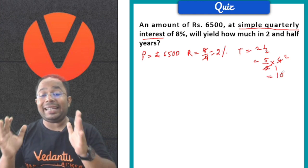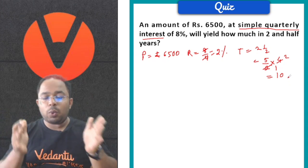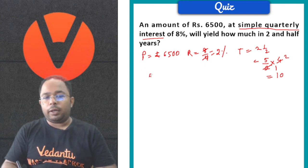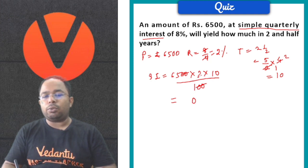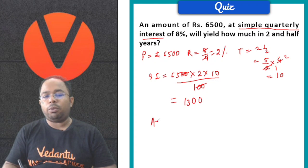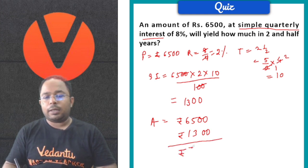So 10 times calculations will be done over the 2 and half year duration. Simple Interest = 6,500 × 2 × 10 / 100. Cancelling zeros: 65 × 2 = 130, giving Rs. 1,300. So the amount becomes 6,500 + 1,300 = Rs. 7,800. That is our answer.